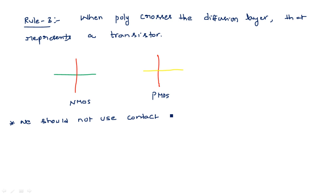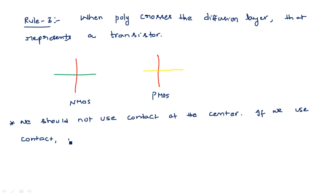We should not use a contact at the center — that means at the cross point. If we use a contact there, it will never be considered as a transistor. Remember: no contact at the center of the poly-diffusion crossing. This is a very, very important rule.